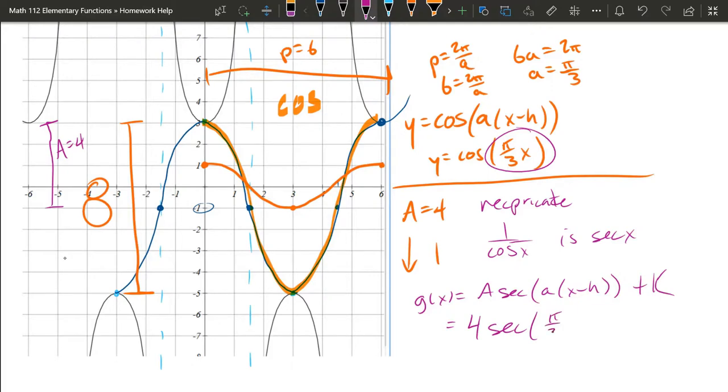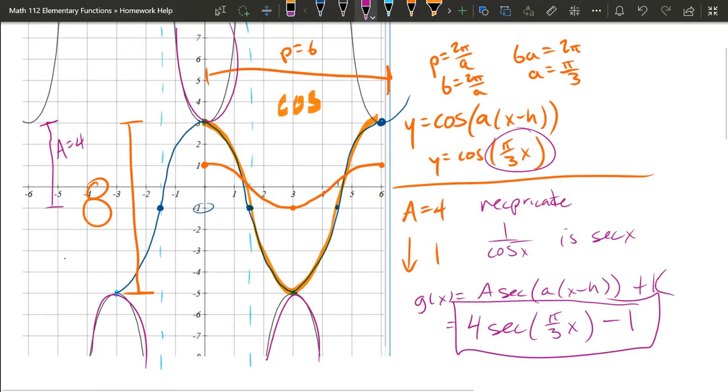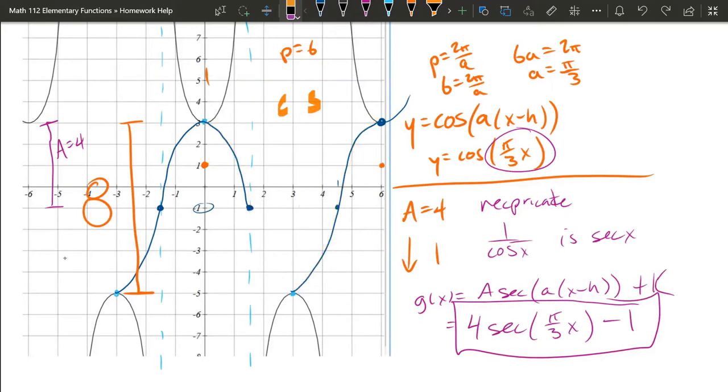And we only have a pi over 3x. Now k, the amplitude came from right there. k is right here. k is negative 1, so it's plus a negative 1. And that is our graph. The original black graph that was here and I wrote all over it. It looks kind of crazy now, but that's the original graph that was on here. If I come through and erase everything. That's this graph that we're looking at here.